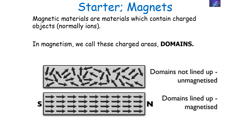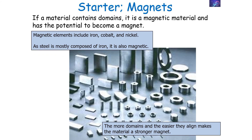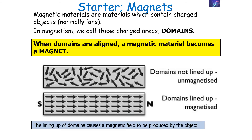What makes a magnet a magnet? Magnetic materials are materials which contain charged objects — normally ions — and in magnetism we call these charged areas domains. If a material contains domains it is a magnetic material and has the potential to become a magnet. The magnetic elements are iron, cobalt, and nickel, and since steel is mostly composed of iron it is also magnetic. The more domains present, the easier it is to align them, making the material a stronger magnet. If a material does not contain any domains, it is not a magnetic material. When the domains are aligned and all acting in the same direction, a magnetic material becomes a magnet.